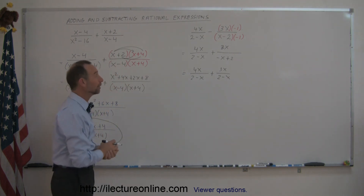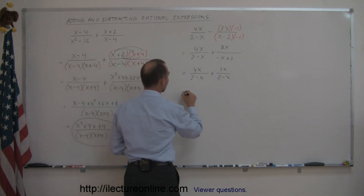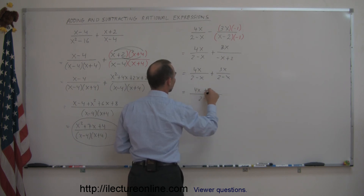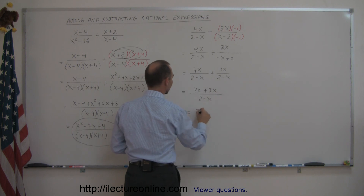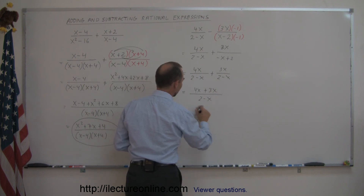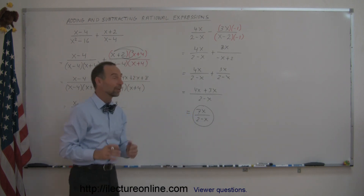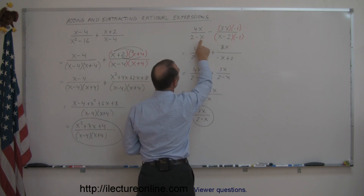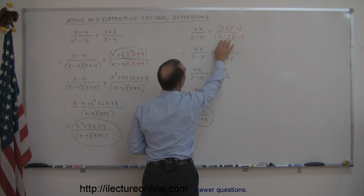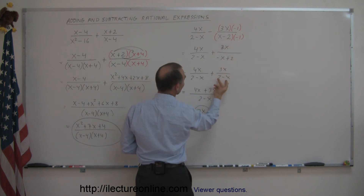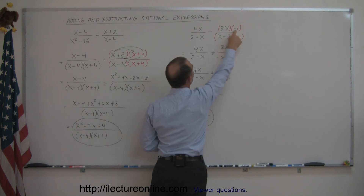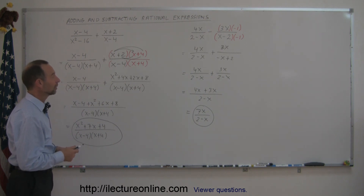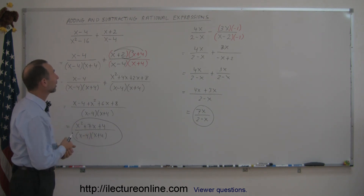Now you can see you have the exact same denominator. Writing over a common denominator of 2 minus x, we have 4x plus 3x, and when we add those together we get 7x divided by 2 minus x — and that is the final answer. The trick is that sometimes the denominators look almost the same but one is the negative of the other; multiplying by negative 1 — and doing the same to the numerator — gives you the exact same denominator. Hopefully that helps with how to add and subtract rational expressions.